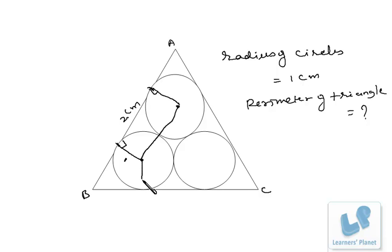For that what we can do is drop a perpendicular over here. Now this complete angle is 60 degrees, that means this angle must be 30 degrees.